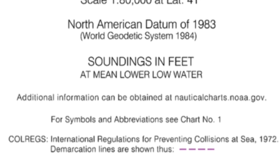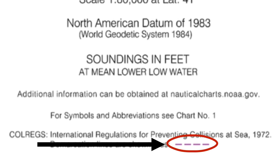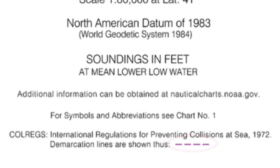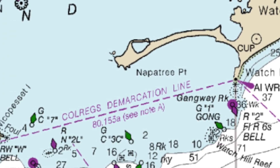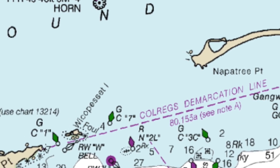The chart also shows the COLREGS demarcation line. This is where the captain switches between the international version of the rules of the road, usually associated with open areas with deep water, and the United States inland version. Being able to identify and understand exactly where the COLREGS demarcation line is located is of critical importance.